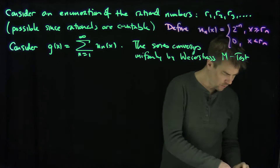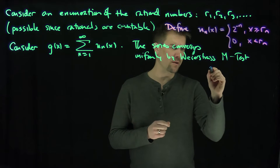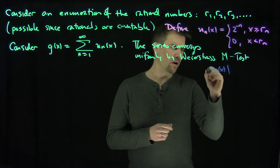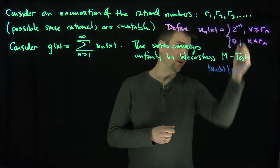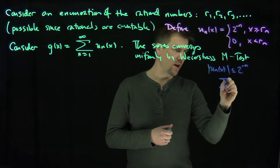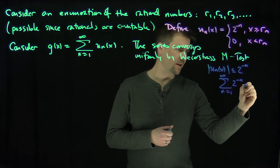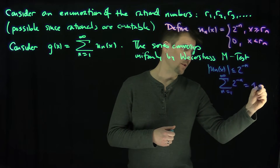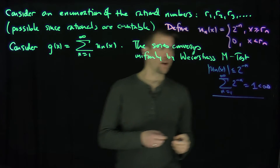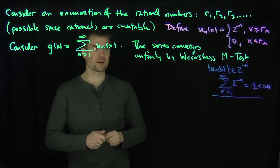To recall, we know that these individual functions u_n of x are all less than or equal to 2 to the power of negative n, trivially. And we know the sum as n goes from 1 to infinity of 2 to the power of negative n equals 1, so it's definitely less than infinity. So we can exactly apply the Weierstrass M-test — the conditions are satisfied.